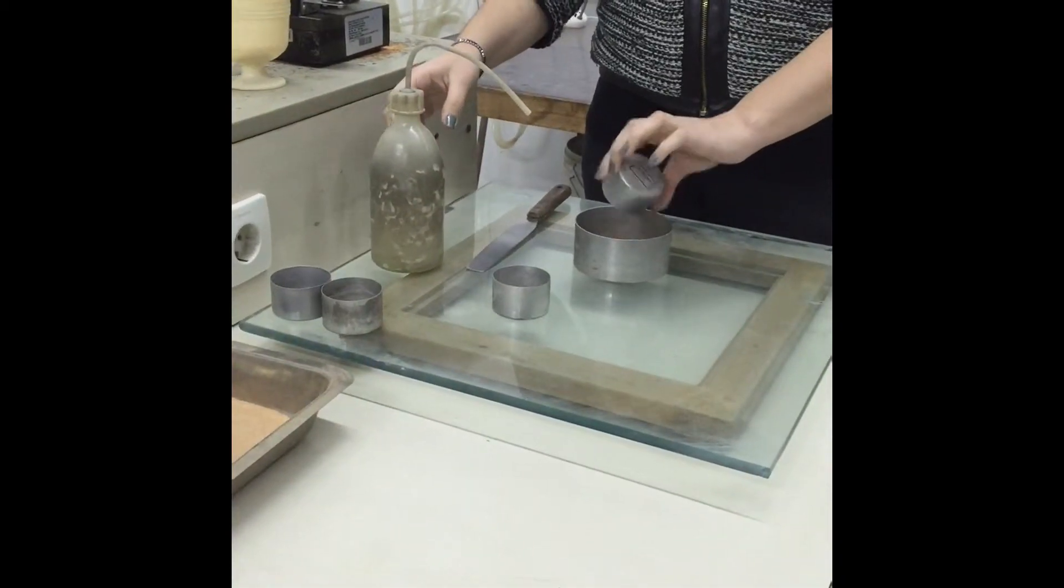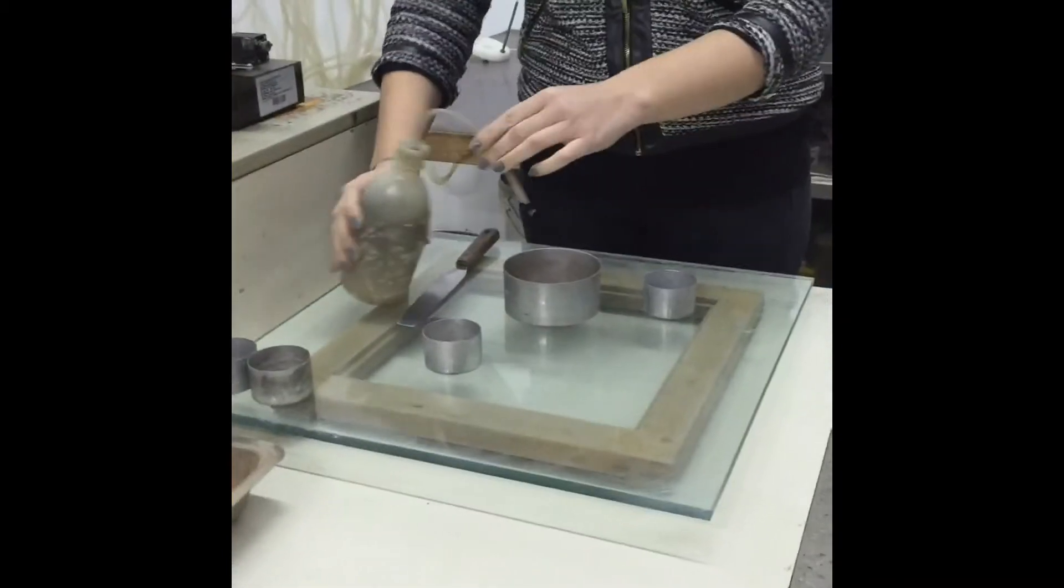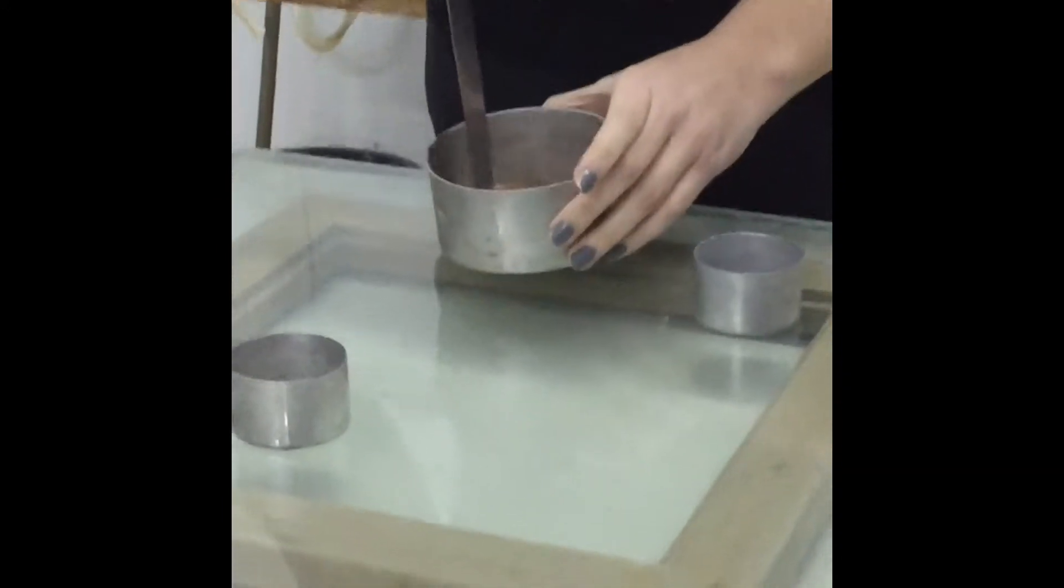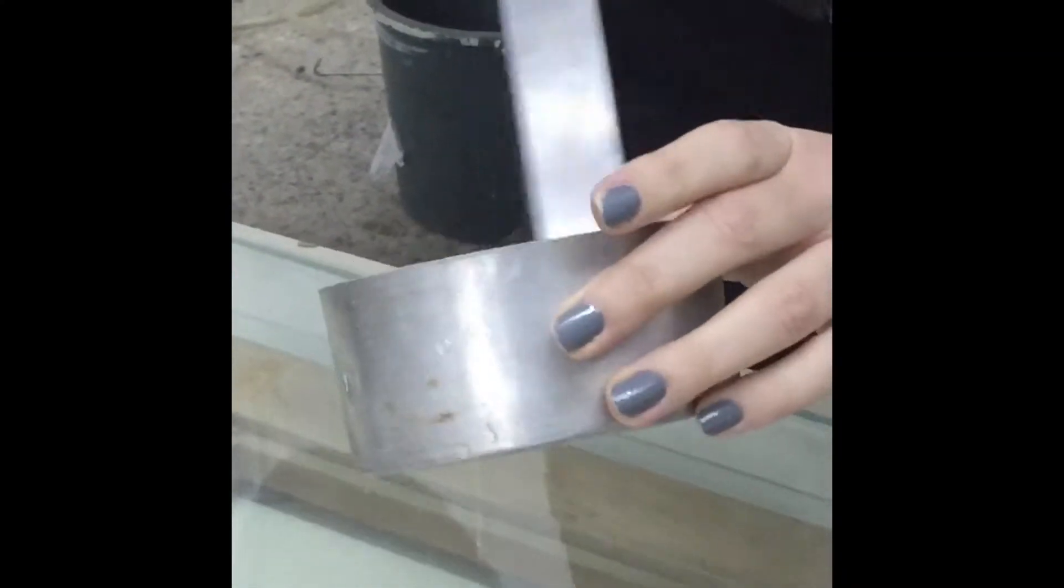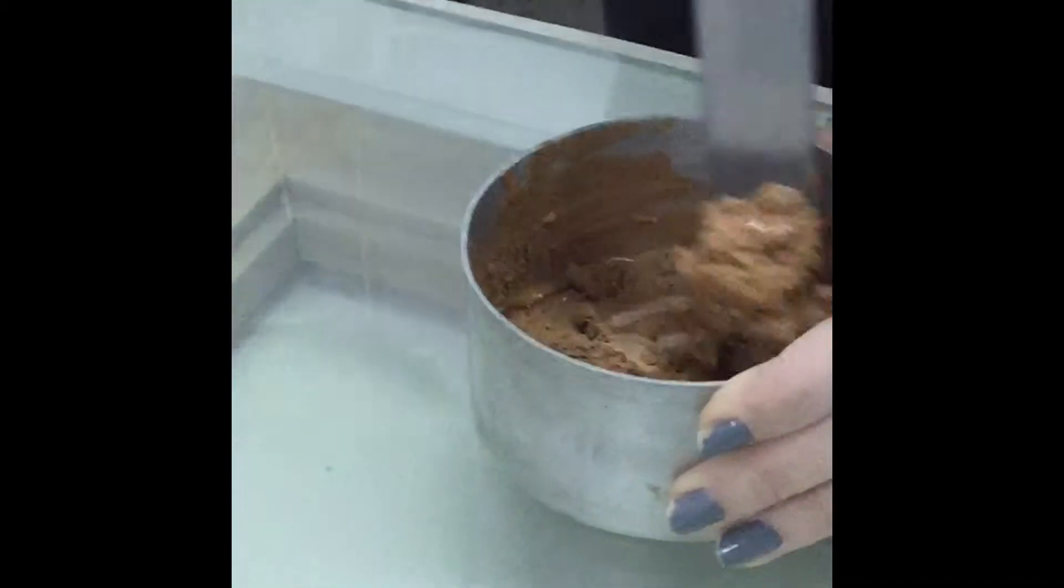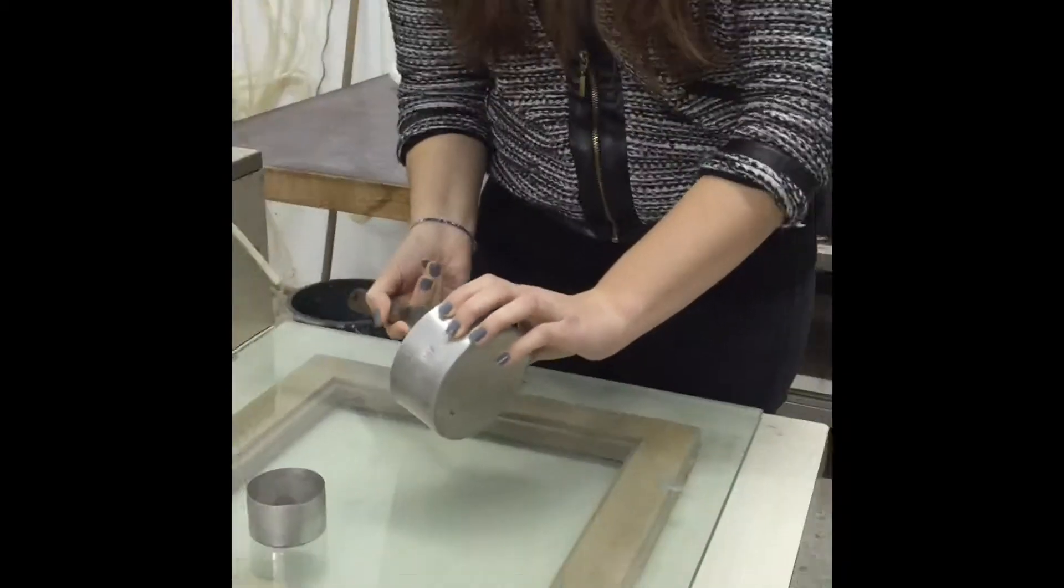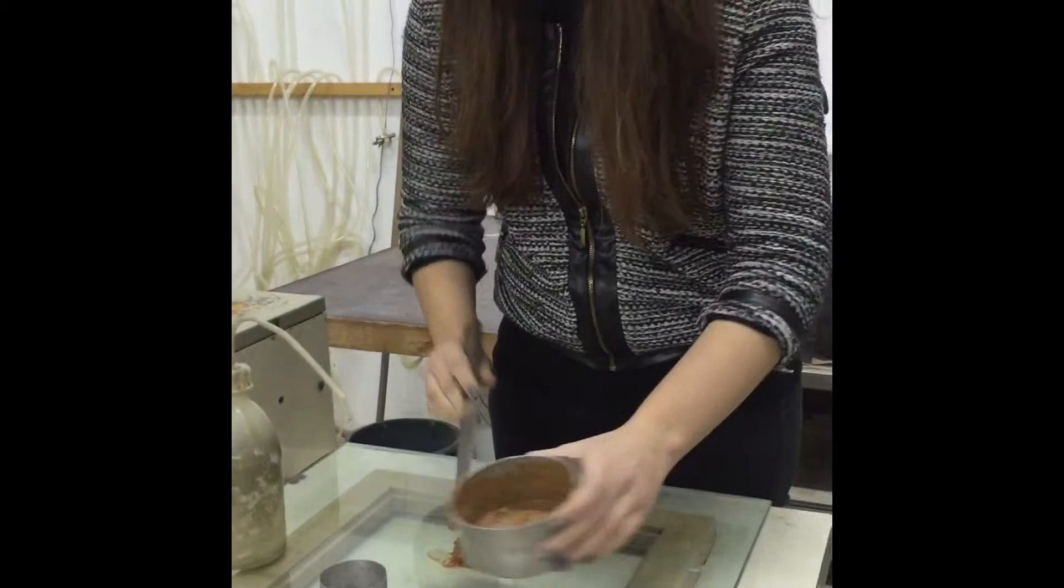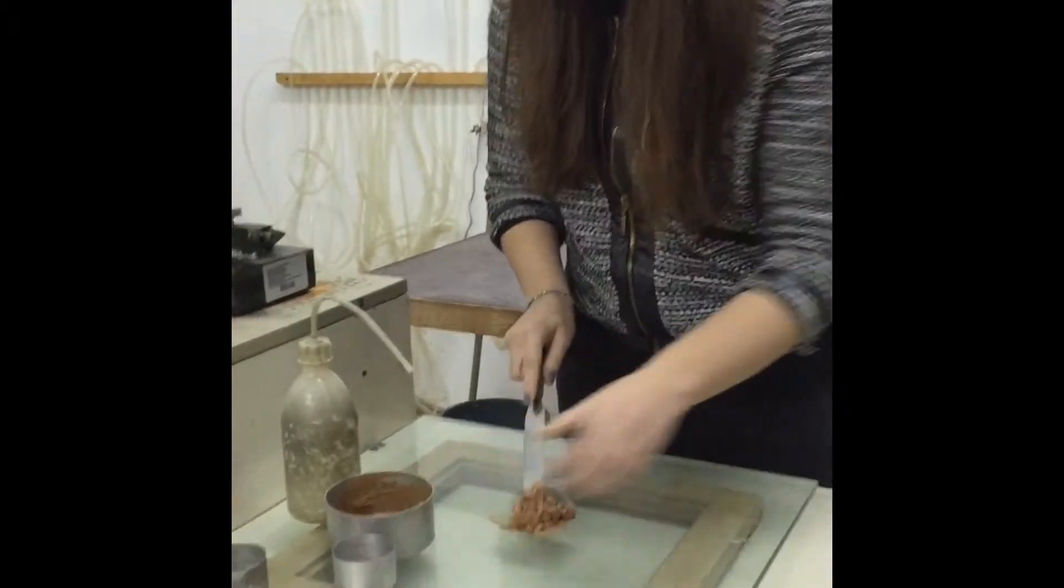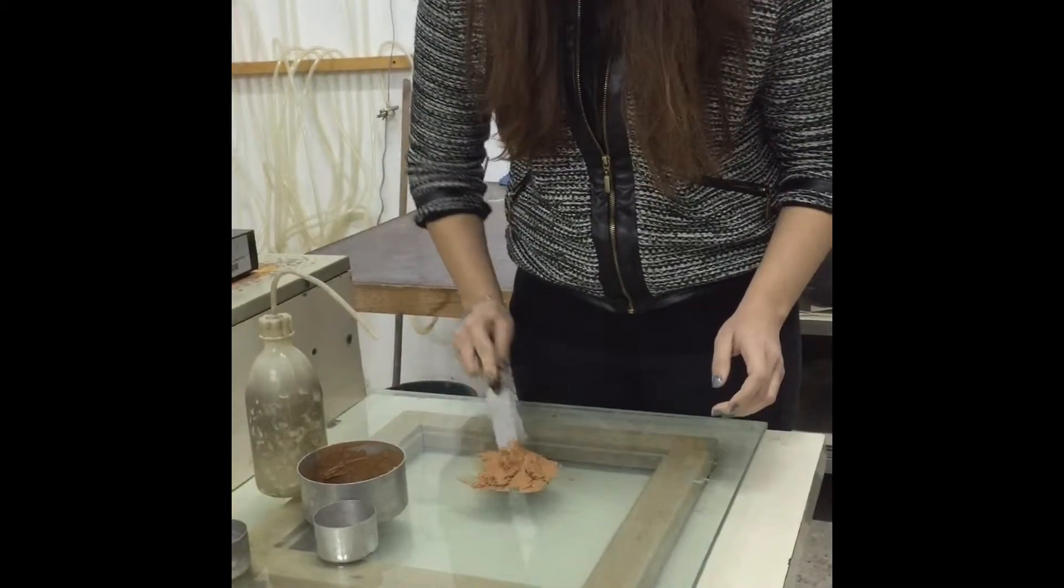Now we put it in the evaporating dish and add some water, now we mix it with the spatula. Now we continue mixing the sample. Now we put it on the glass plate and we mix it by spatula to make it uniform.